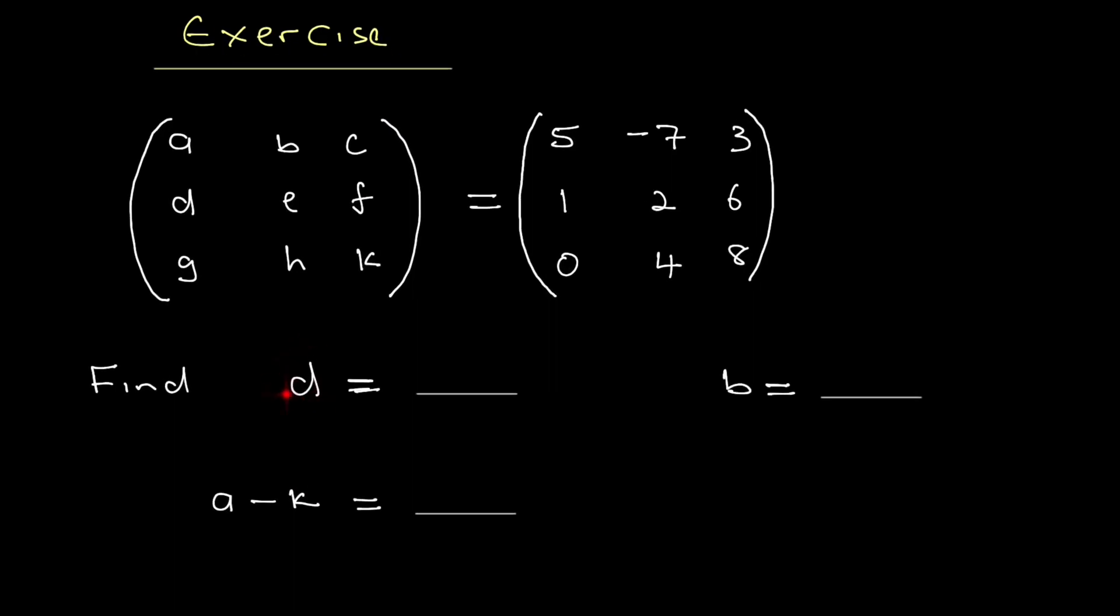D here will be equal to 1, and B here will be equal to minus 7. A minus K: this is A which is 5, and K is 8. 5 minus 8 is minus 3.